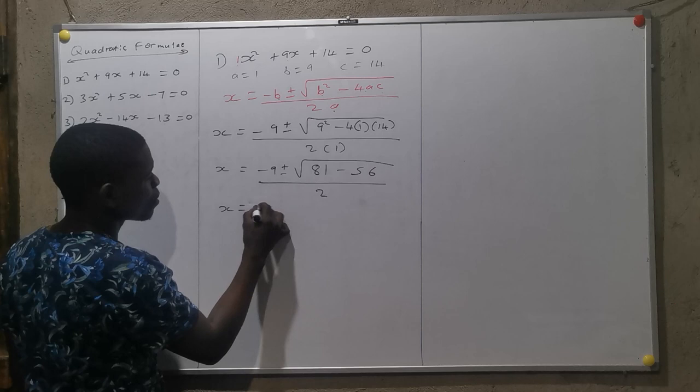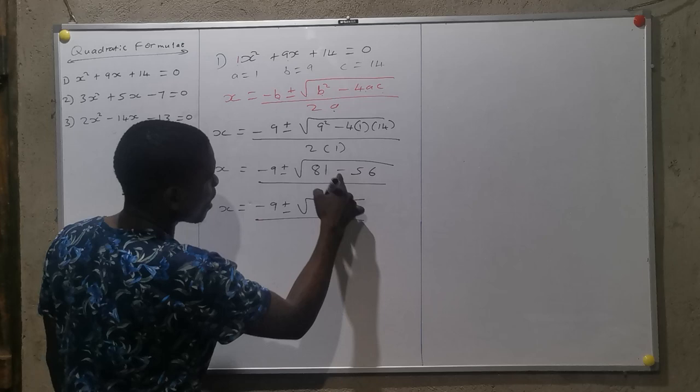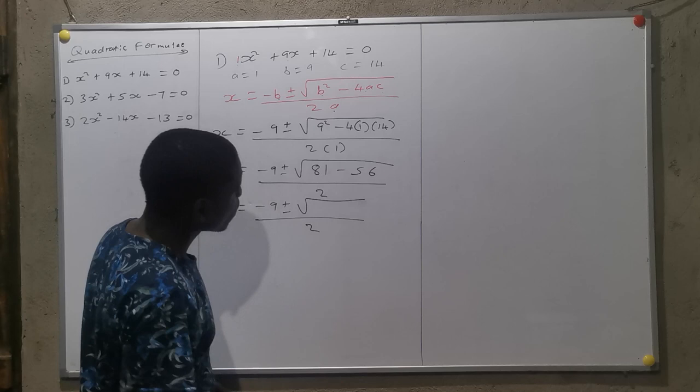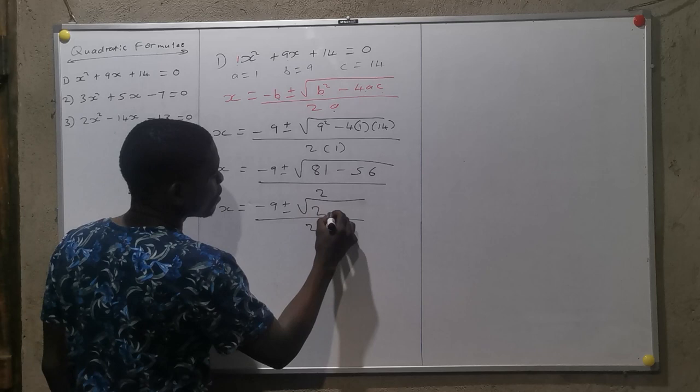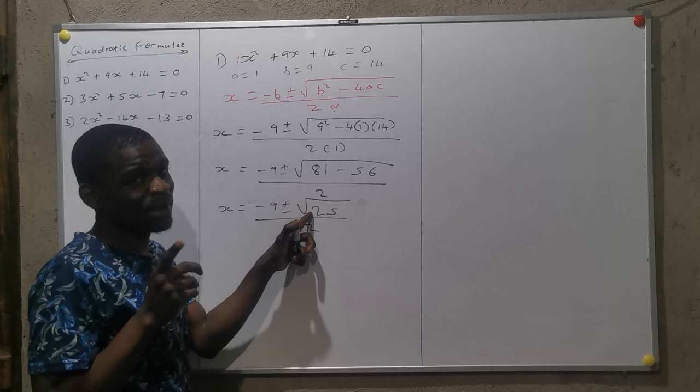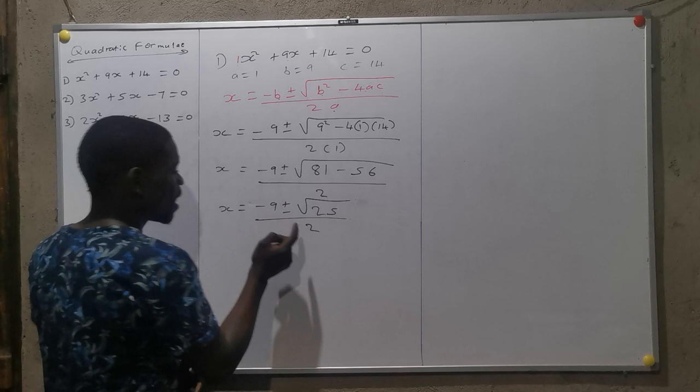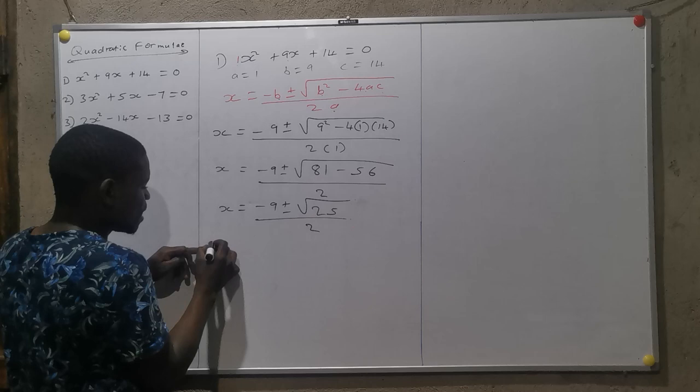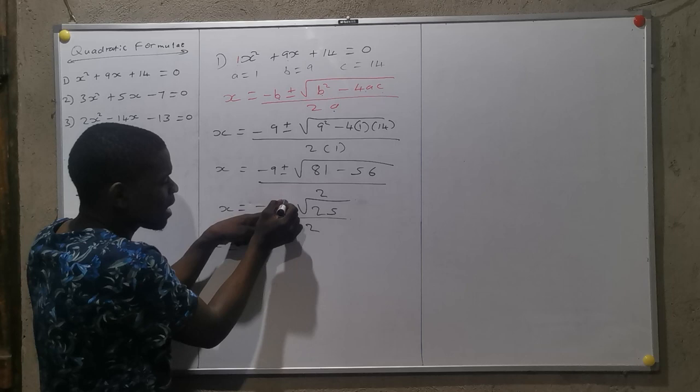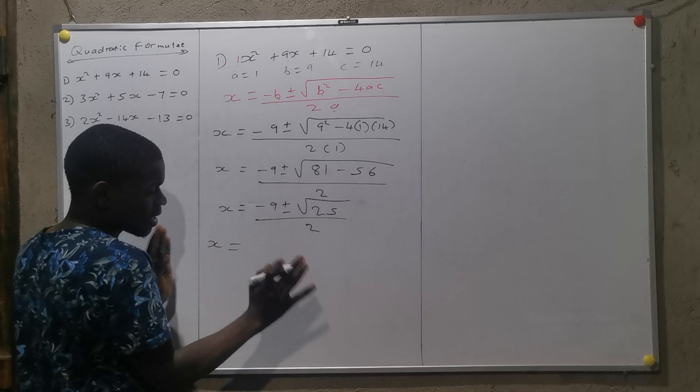Over 2. Then I simplify. X is equals to minus 9 plus or minus the square root of 81 minus 56, which equals 25, over 2. When I have 25 under the square root, it's positive, so I can continue. If I get something like minus 25, it will become difficult to find the value of X.